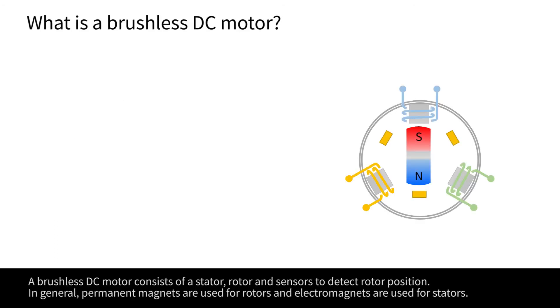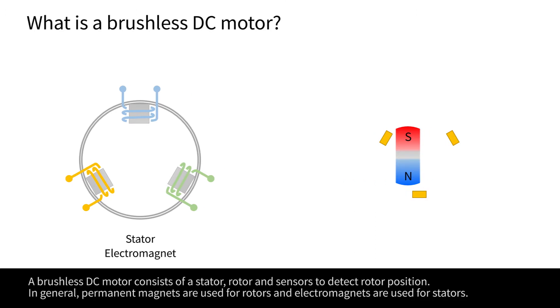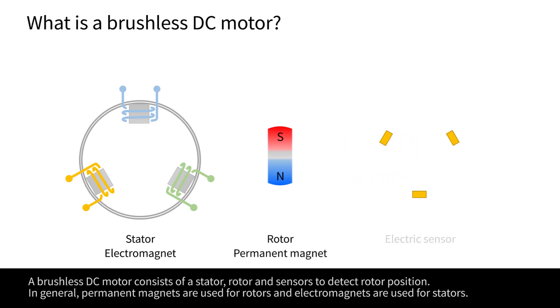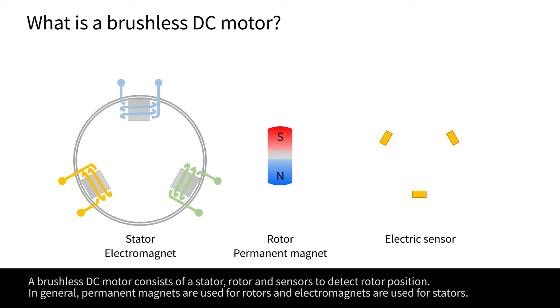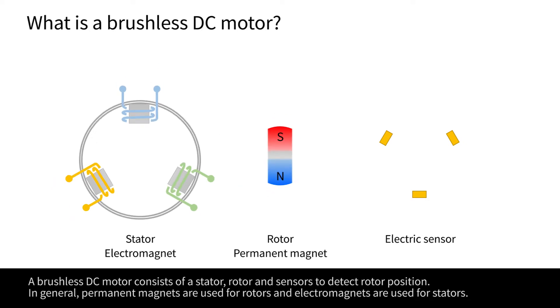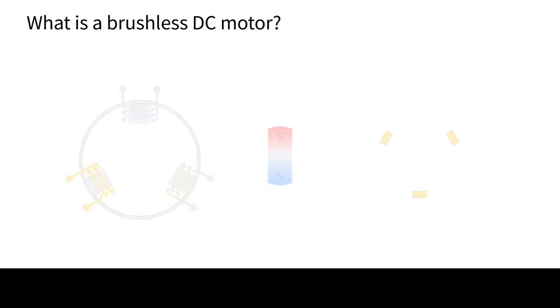A brushless DC motor consists of a stator, rotor, and sensors to detect rotor position. In general, permanent magnets are used for rotors, and electromagnets are used for stators.